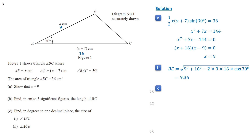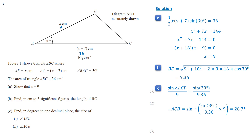Using the sine rule: sine(ACB) over 9 equals sine 30 over 9.36. Taking the inverse sine gives angle ACB equals sine inverse of (sine 30 over 9.36) times 9, so angle ACB approximately equals 28.7 degrees. Finally, to find angle ABC, we subtract the sum of the two other angles from 180. Angle ABC is 121.3 degrees.